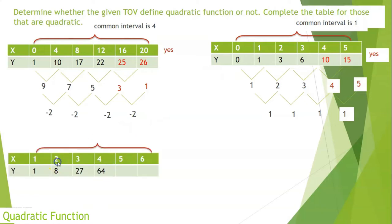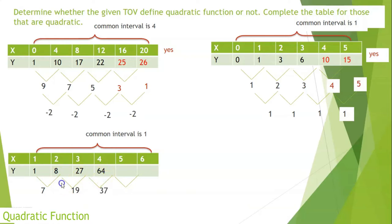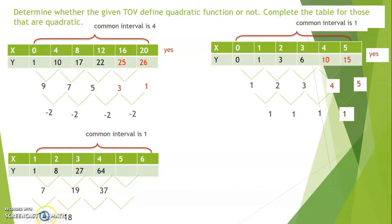Another example. There is still a common interval in x of 1. The first difference is 7, then 27 minus 8 is 19, and 64 minus 27 is 37. Getting the second difference: 19 minus 7 is 12, and 37 minus 19 is 18. The second difference is no longer equal, meaning it's no longer common. Therefore, these ordered pairs do not define a quadratic function.